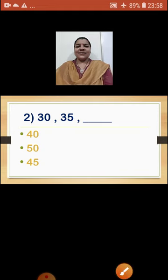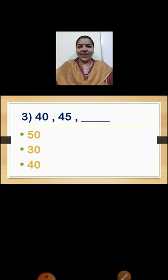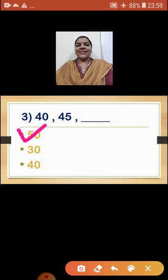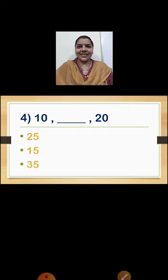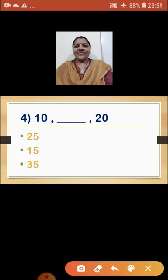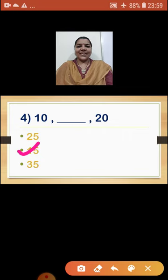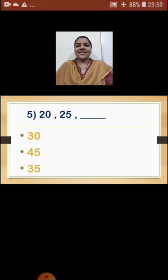Question 3: Given 40, 45 — what comes next? The correct answer is 50. Very good. Question 4: Given 10 — what comes next in the groups of 5? After 10 comes 15, and then 20. So the sequence is 10, 15, 20. Question 5: Given 20, 25 — and then comes number 30. Very good.